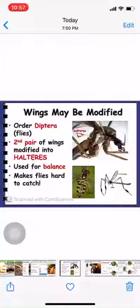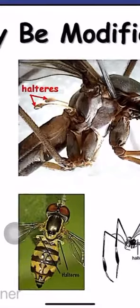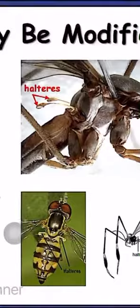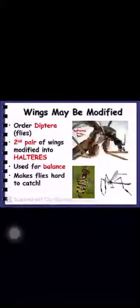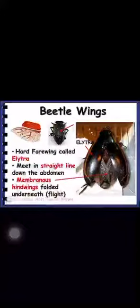The wings can be modified in different insects. For example, in Diptera — mosquito and housefly — the second pair of wings is modified into a halter. The forewing remains as such and the hindwing has been modified into a halter, which is used for balance — it is a balancing organ. In beetles, the forewings are hard and are called elytra, while the hindwings are membranous and used for flying; the forewings are protective in nature.